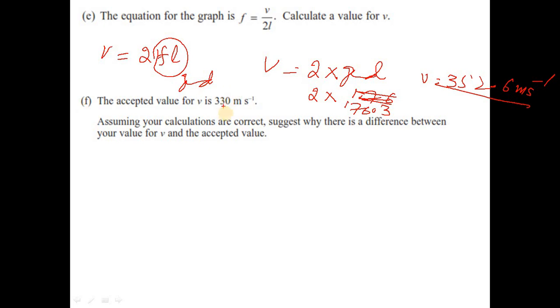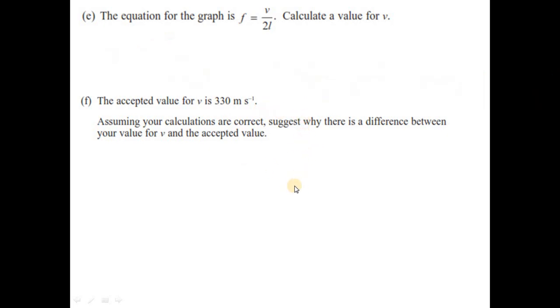The accepted value for v is 330 meter per second. Assuming your calculations are correct, suggest why there is a difference between your values for v and the accepted values. Of course we might have some error in our measurement. Moreover, the speed of sound depends on the temperature of that day. So there might be some error in our measurement like length and the frequency. Speed of sound depends on the temperature.